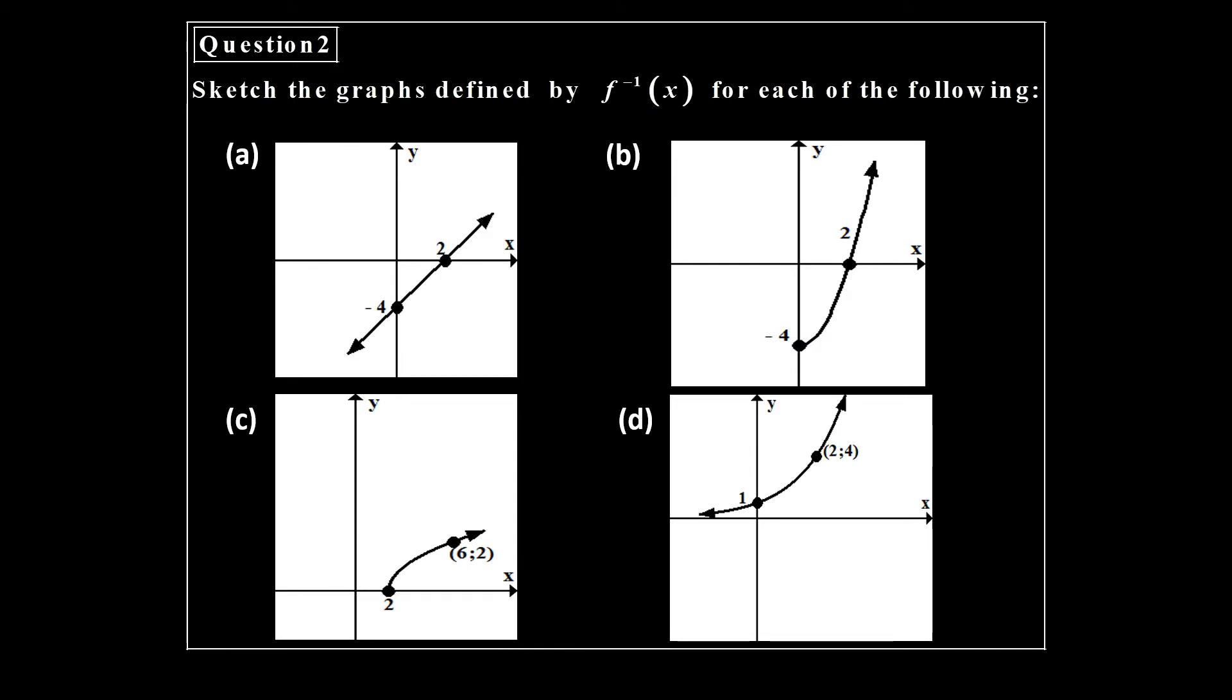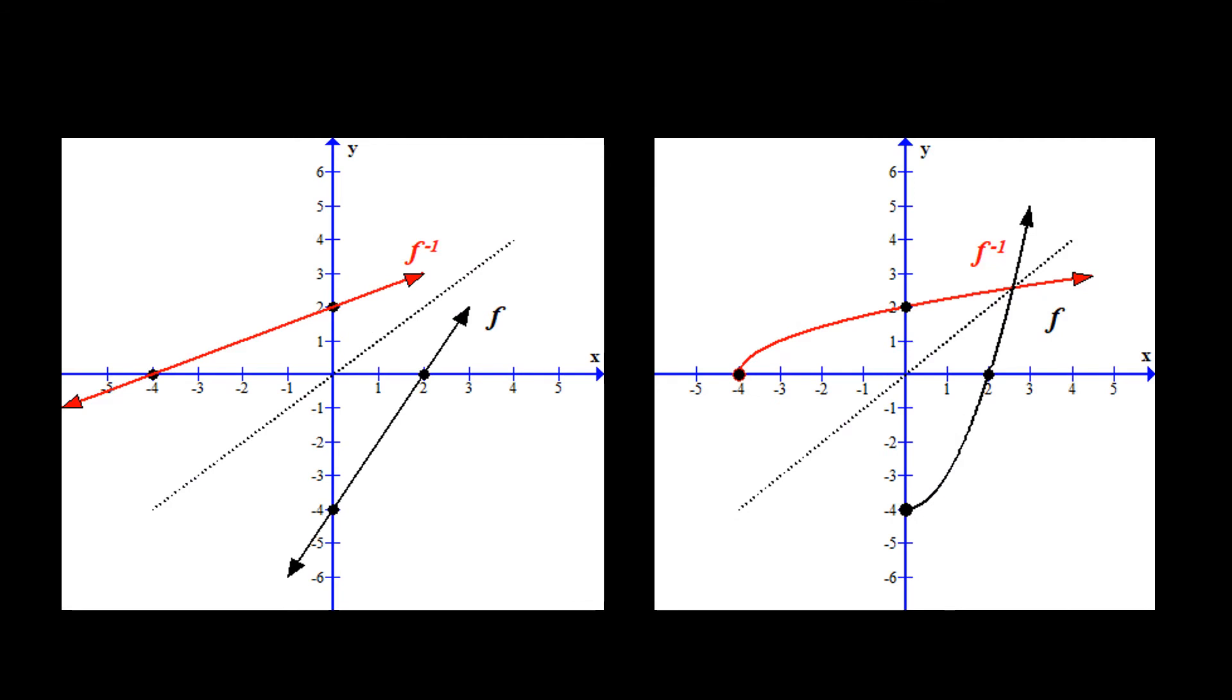Then we have a question where you are given a graph and you have to use that graph to draw the inverse for that graph. There we have the answer for the first two. The given one is in black and the inverse is in red, as you can see there.